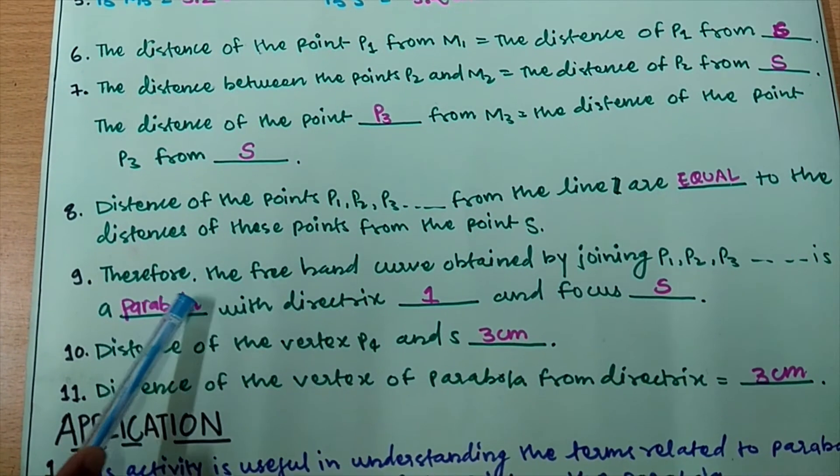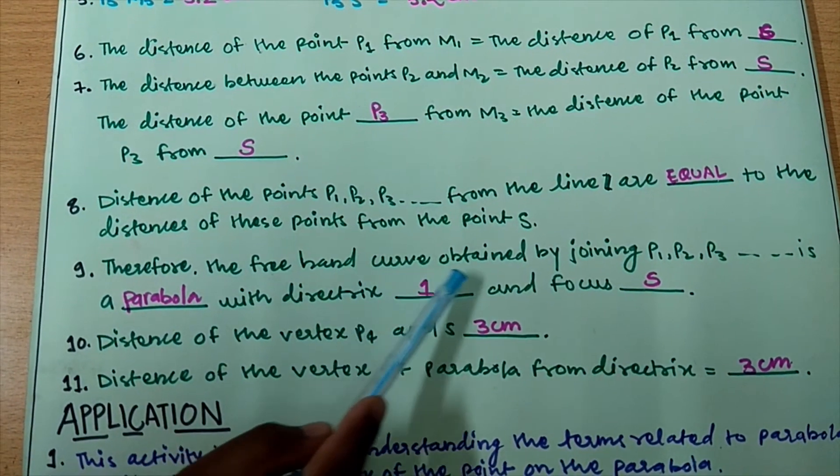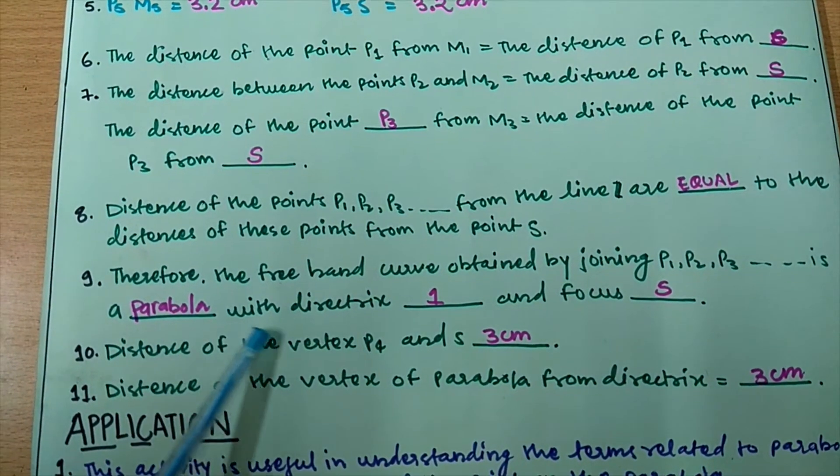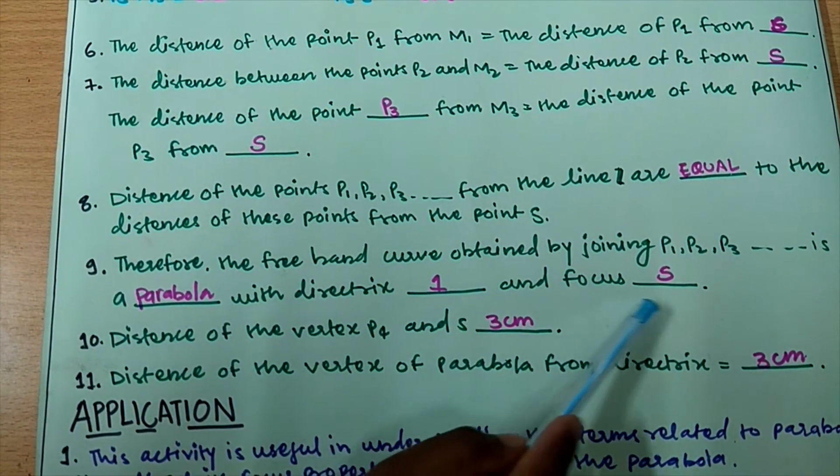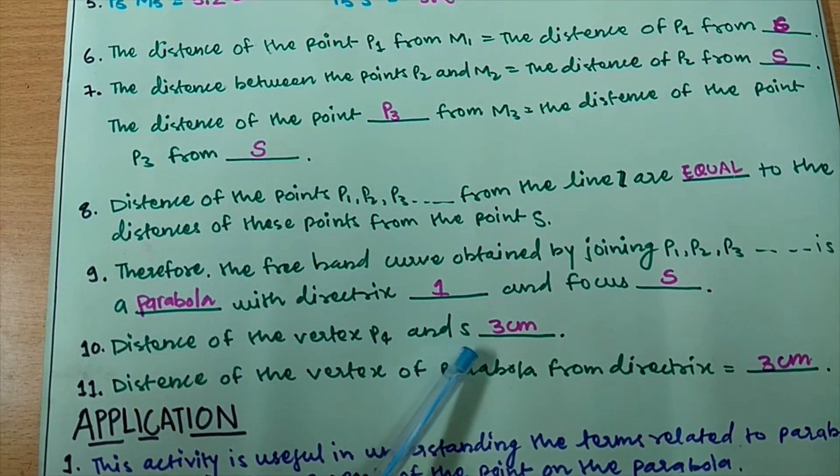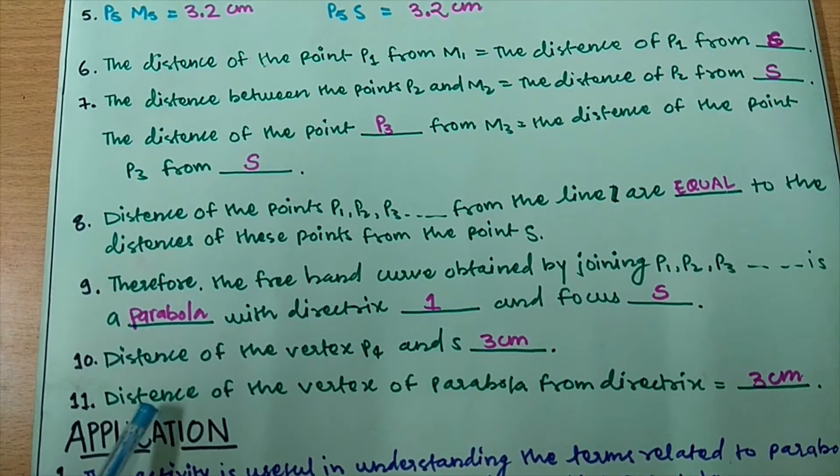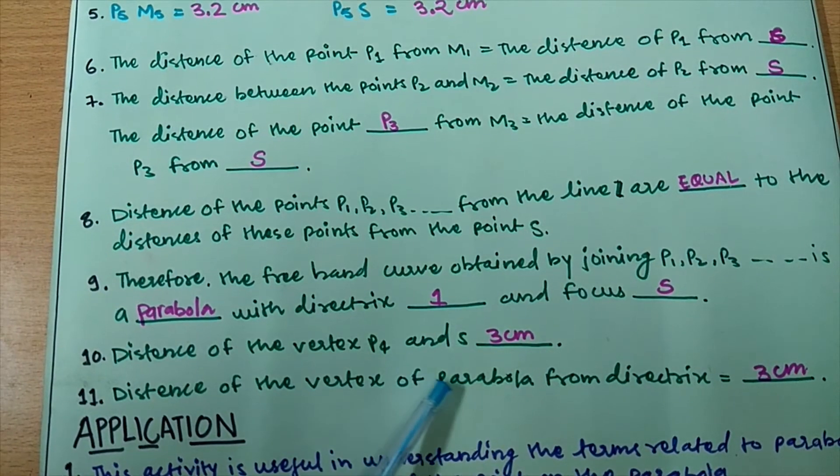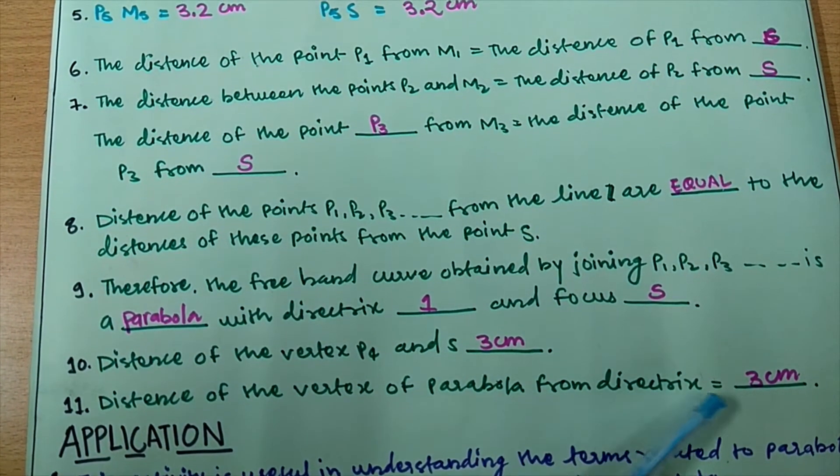Therefore, the freehand curve obtained by joining P1, P2, P3 and so on is a parabola with directrix L and focus S. The distance of the vertex P3 from S is equal to 3.3 cm. Distance of the vertex of parabola from directrix is equal to 3.3 cm.